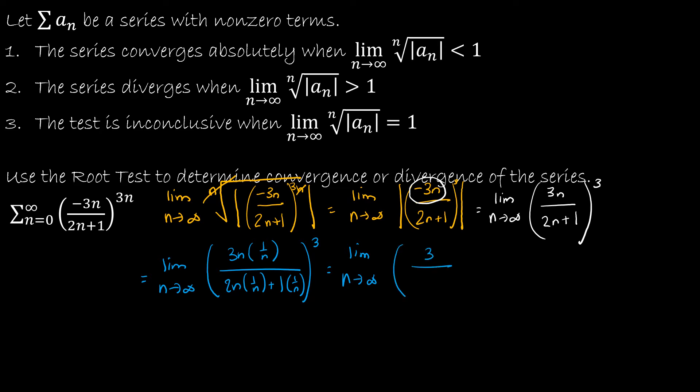And that gives us 3n over n is just 3, 2n over n is just 2, and 1 times 1 over n is 1 over n. And then as I take that limit as n approaches infinity, that limit is 3 halves, again to the third power. So 3 halves to the third power is going to give me 27 eighths, and 27 eighths is greater than 1. And if 27 eighths is greater than 1, then the series diverges.